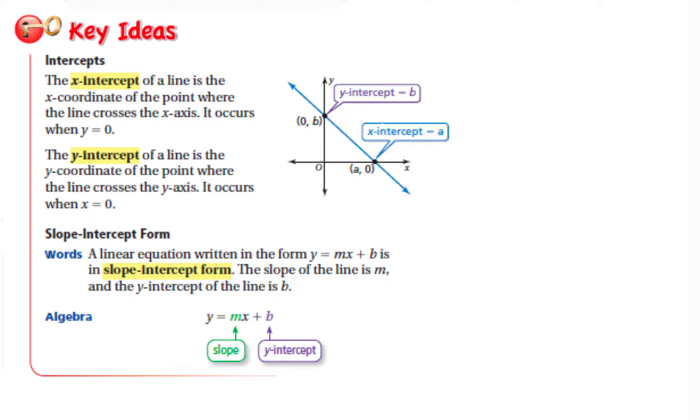Alright, so intercepts. Intercepts are basically where the line is hitting the x-axis and the y-axis. The x-intercept of a line is where that line hits the x-axis, and it is the value where y equals 0. The y-intercept is the opposite. When x is 0, what is the value of y? That's where the line hits the y-axis.